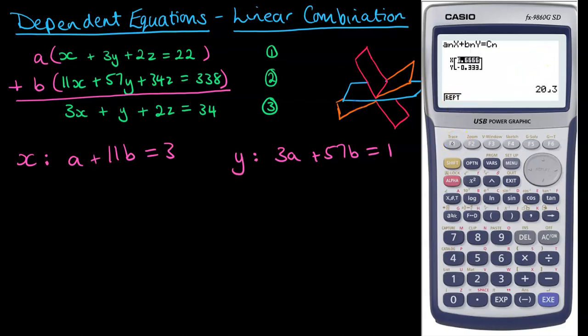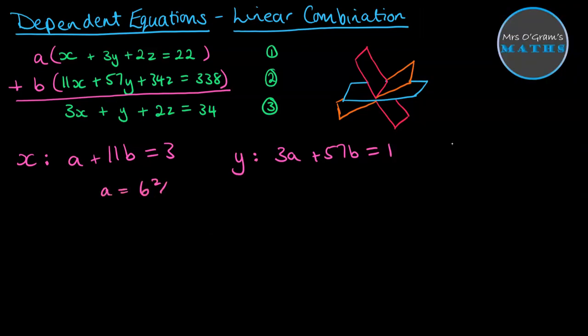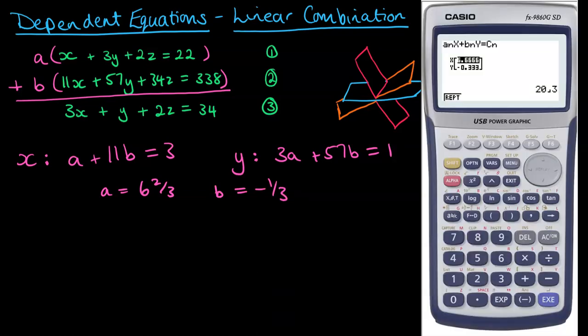So if I put solve in there, we get that a was 6 and 2/3. And b is negative 1/3 from that equation solver.